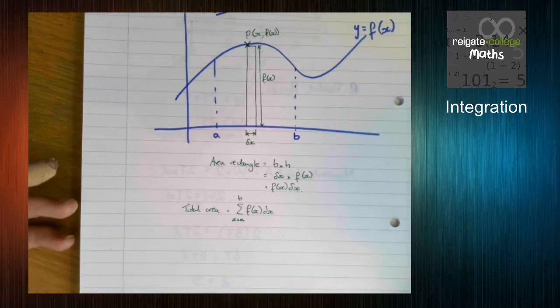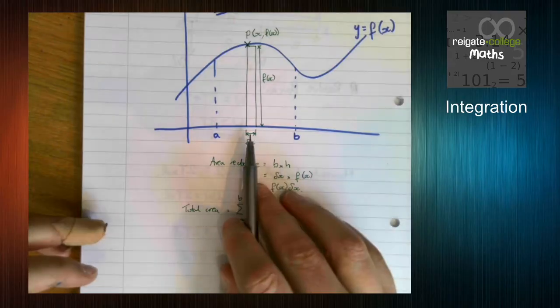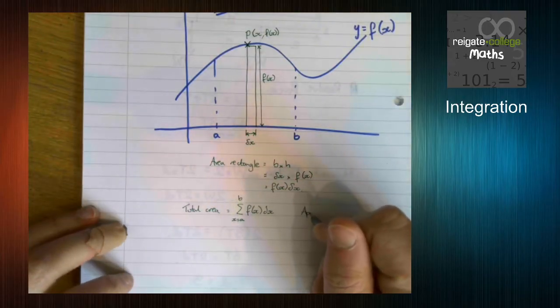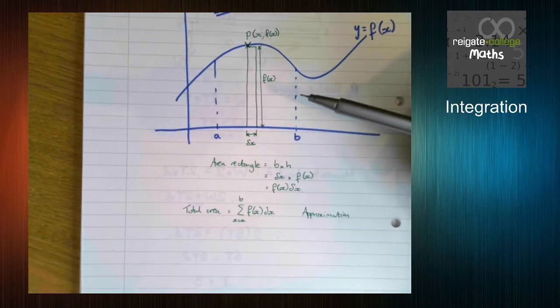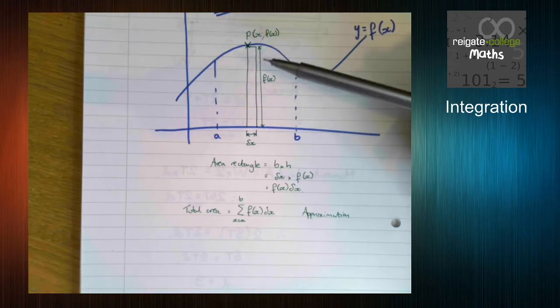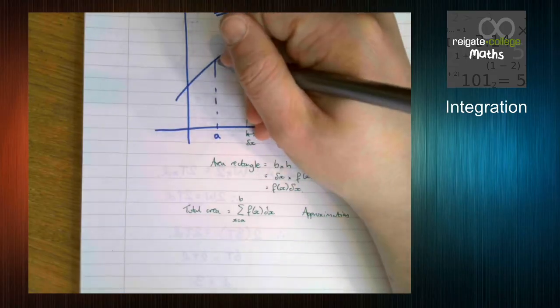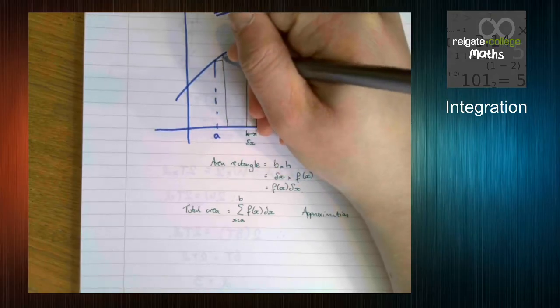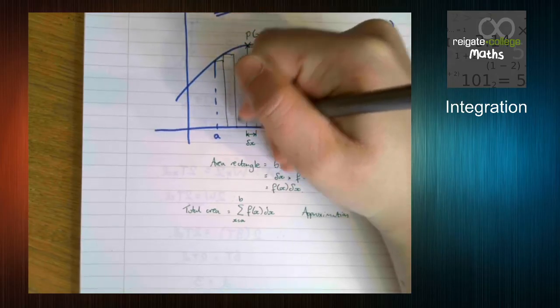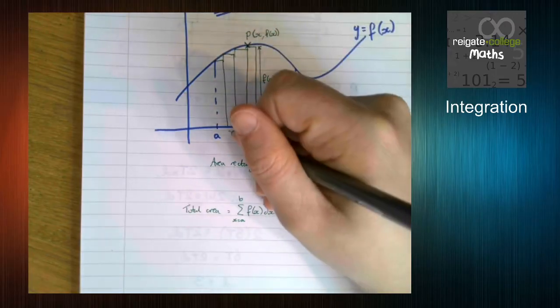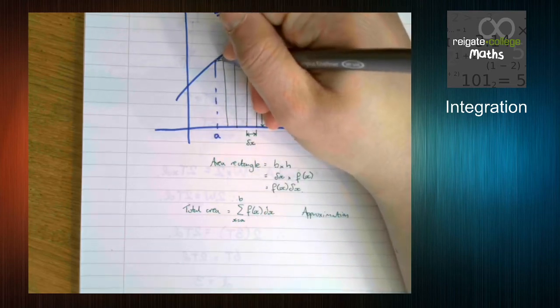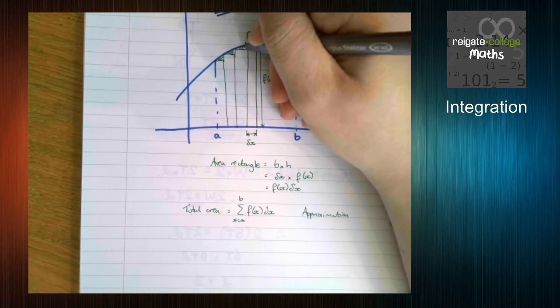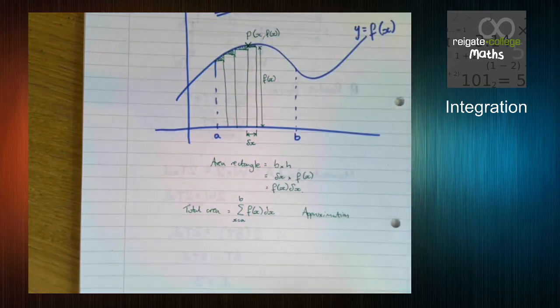But where does integration come in? Well, this is only an approximation. And for this curve that I've drawn here, it's going to be an under approximation because you can see for all of my rectangles, which are all the same distance apart, they're just different heights. For all of my rectangles you can see there's a little bit missing. We've got this little bit missing here. So what could we do to improve our approximation?